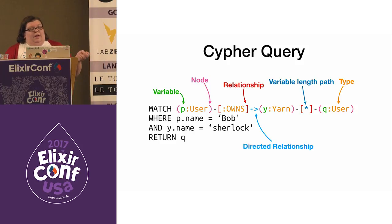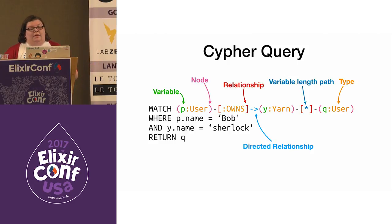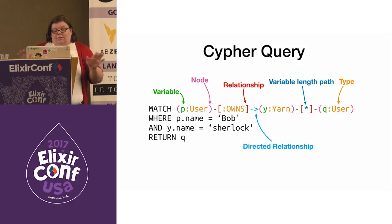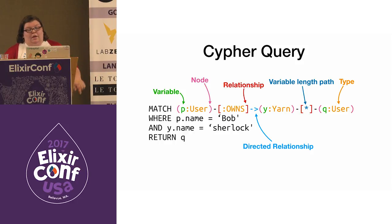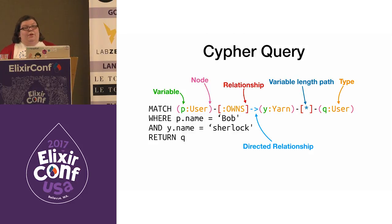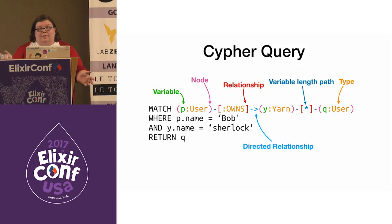Where you see a colon followed by a word, that's a type — the overarching names we give to relationships and nodes. The arrow in the middle indicates a directed relationship. So the query matches a user P that owns a yarn, finds all users associated with that yarn named Sherlock, and returns all users with some relationship to this yarn. Unlike SQL where the returning statement is optional, RETURN is required in Cypher, which lets us completely gloss over all the joins.